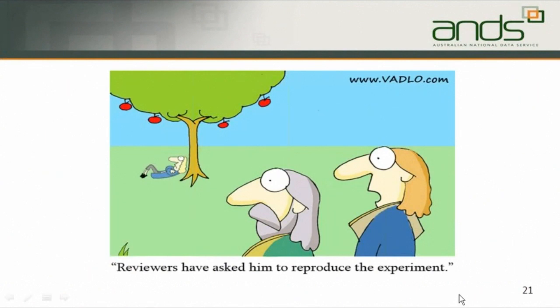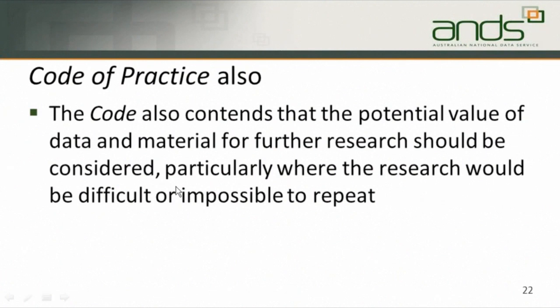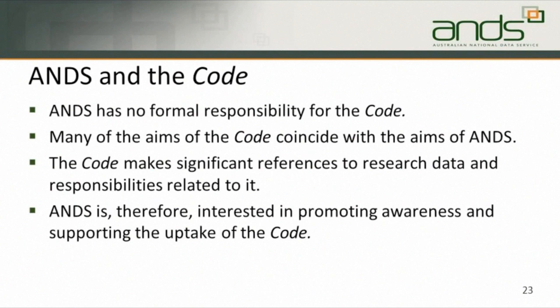You can see in this cartoon the implications — he can only probably reproduce his research outcomes if it was the right season and the right time. The Code of Practice contends that the potential value of data and material for further research should be considered, particularly where the research would be difficult or impossible to repeat. If you look at that cartoon, Newton would have to be under the tree when the apples were ready to fall and the rest of the year he couldn't repeat the experiment. ANS has no formal responsibility for the Code, but since the Code coincides with the aims of ANS, ANS promotes and is interested in increasing awareness of the Code.